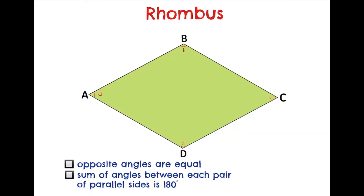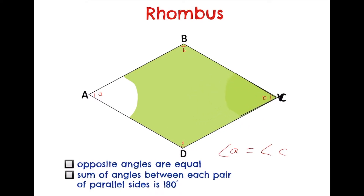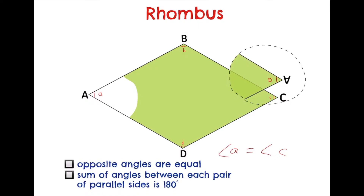The third property of a rhombus is that opposite angles are equal. So now we're going to prove that angle A is equal to angle C. I'm going to cut this portion out and I'm going to flip it and see if it overlaps. You should see that it's overlapping — so yes, that is true. I shall place it there.